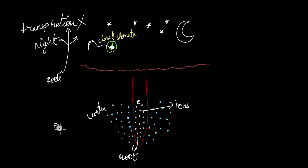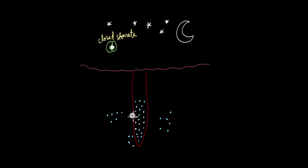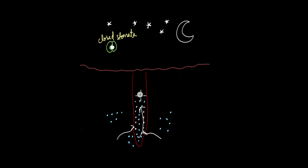Through osmosis, water always moves from a region of higher concentration to a region of lower concentration. So because of this concentration gradient, water moves into the root through osmosis. The movement of this water combined with the presence of these solutes pushes the water within the root upward. As water enters from the bottom, whatever ions and water molecules are above get pushed up — and this pushing up of water and solute molecules is what generates the root pressure.